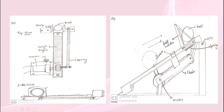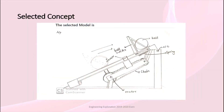Our fourth concept uses a slingshot rocket mechanism to launch the ball. We selected the fourth concept because it has less weight, lower cost, and is simpler to manufacture. By analyzing our Pugh chart we selected this fourth concept. This is our selected concept model which we are going to produce.